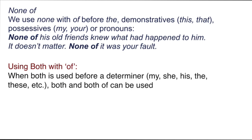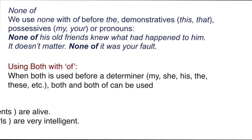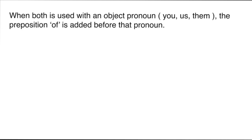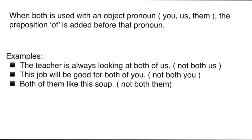For 'both' and 'both of': when 'both' is used with a determiner, both forms can be used — for example, 'Both his parents are alive' or 'Both of his parents are alive.' When used with an object pronoun, the preposition 'of' is required — for example, 'The teacher is always looking at both of us' or 'This job will be good for both of you.' We cannot say 'both you' or 'both them' without 'of'.